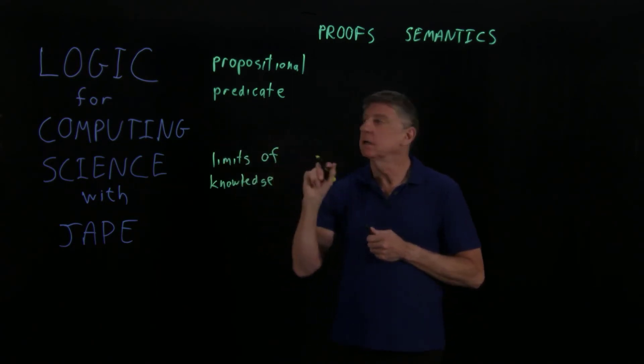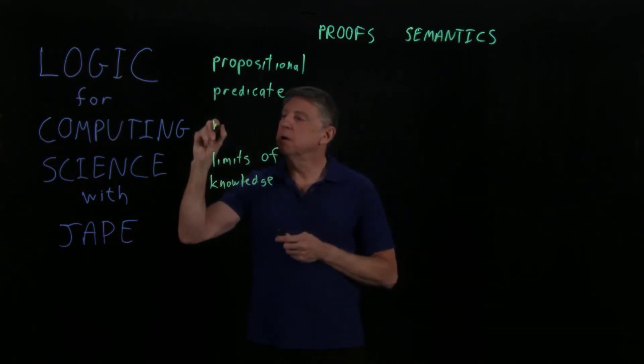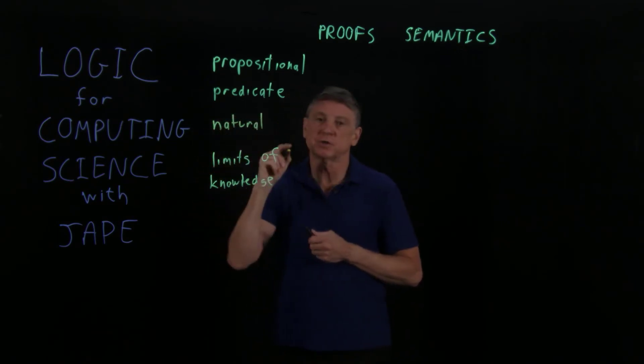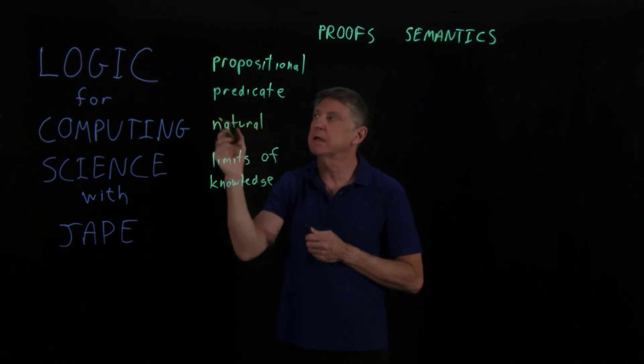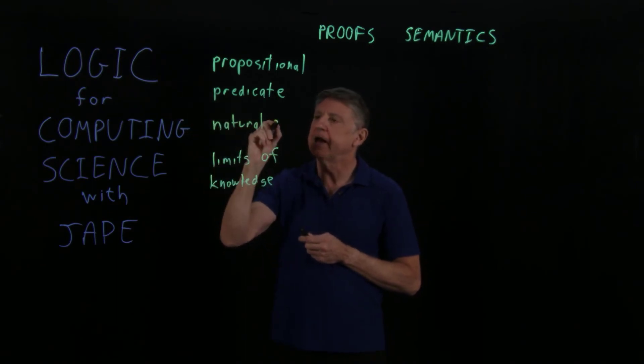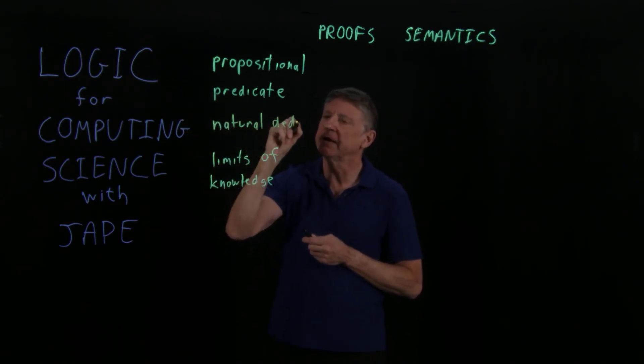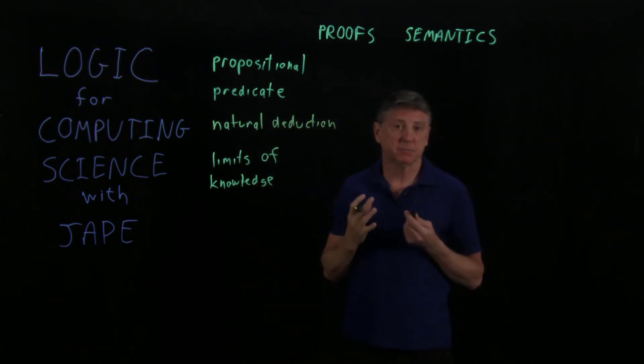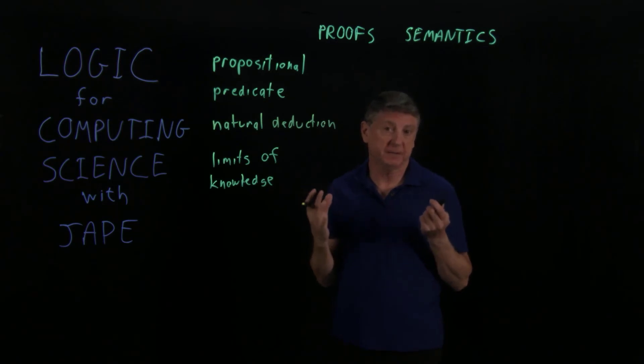And the computing part is, we're going to use a method that's called natural deduction. There are many logical systems or ways of formalizing logic. And the one that we'll use is called natural deduction. And we're using it partly because it best models the way that, for example, mathematicians perform their proofs.